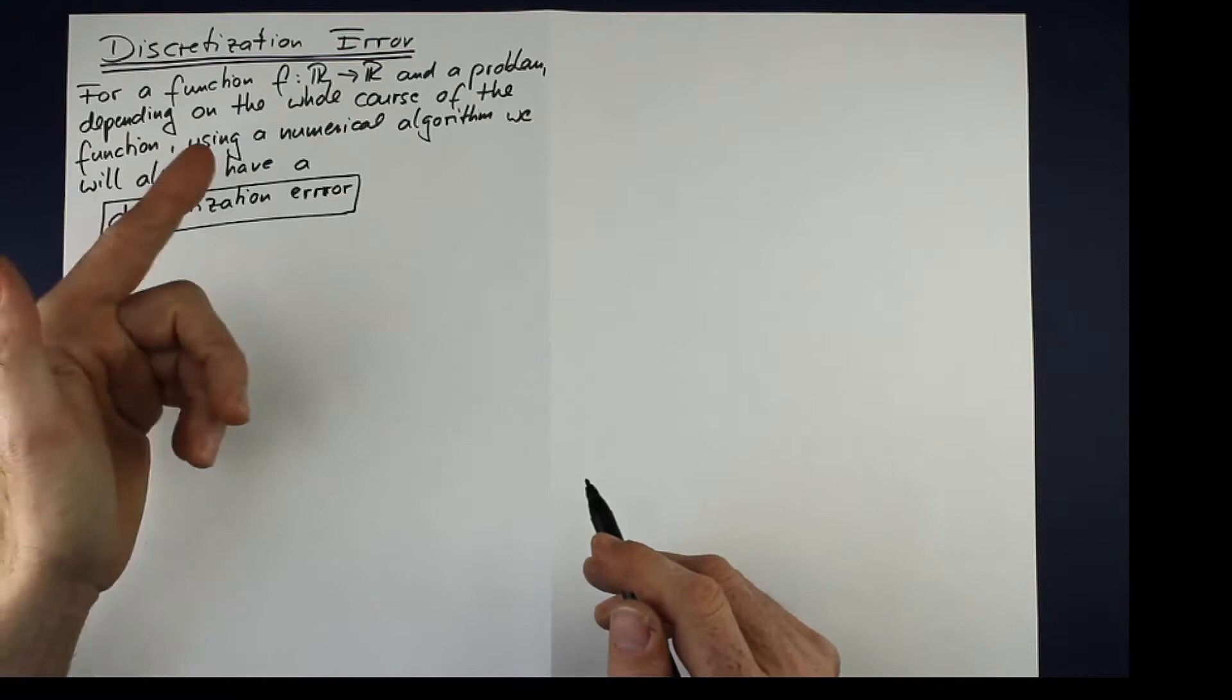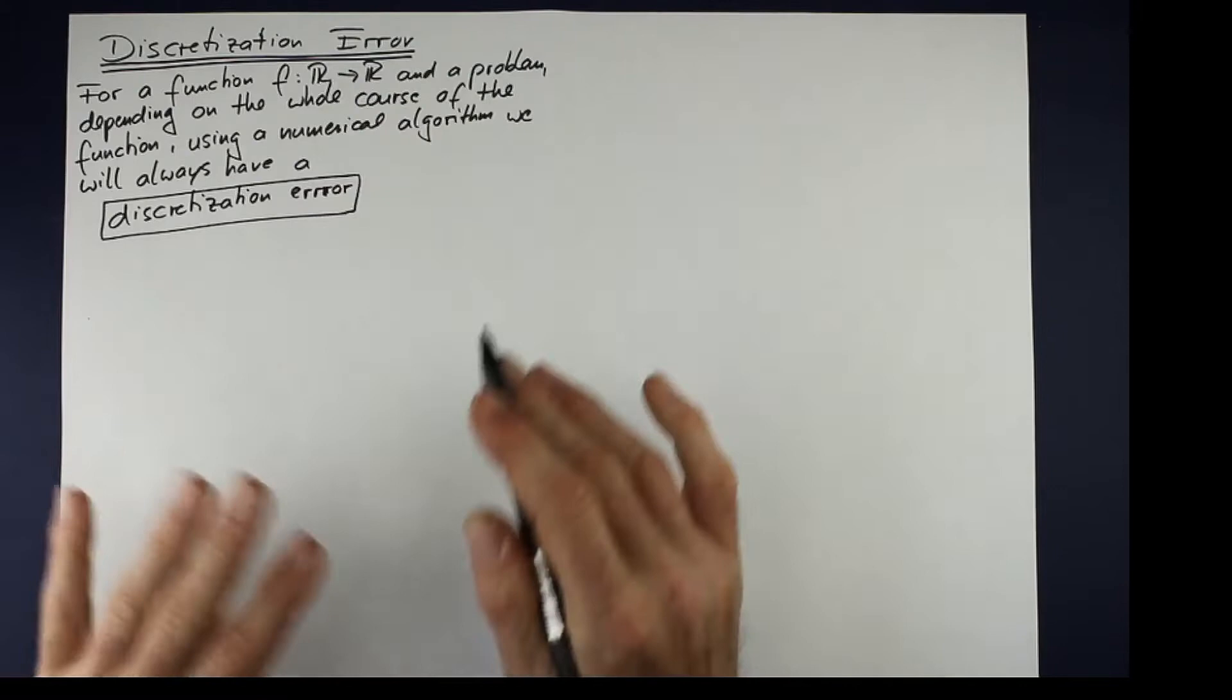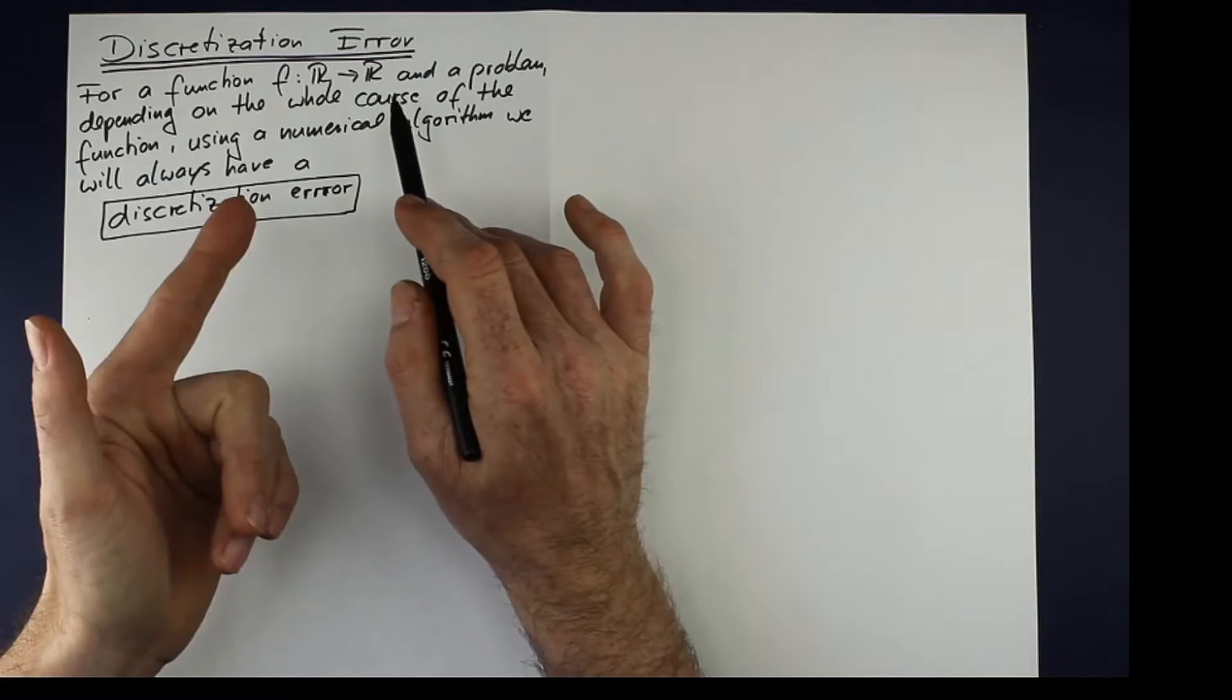If you have a function r to r, it can also be a function of two variables or more than one, but let's keep things simple. And if the solution depends on the whole function, not only on some points, but on the whole function,